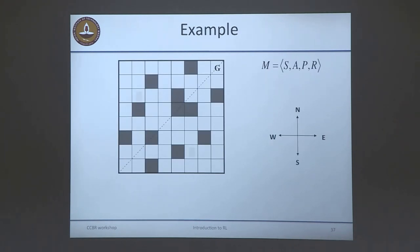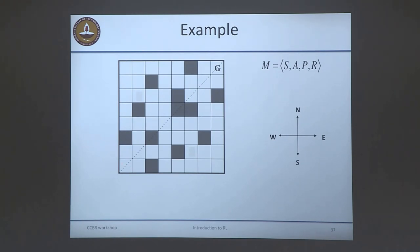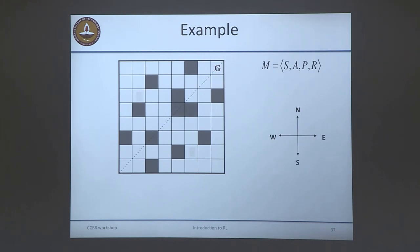Here's a simple example: a grid world. Each cell is a state the environment can be in. The agent occupies one of these cells, so the environment state is just which cell the agent occupies. Actions are four: North, South, East, West. You get a penalty of minus one for every time step it moves, and the goal is to reach the cell marked G, at which point the episode terminates. The sooner you reach G, the fewer minus ones you accumulate. Optimal behavior is to take the shortest path to the goal.